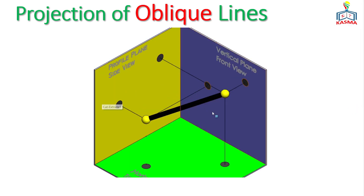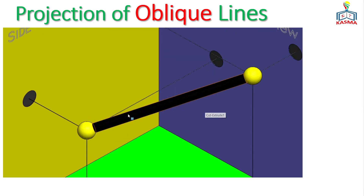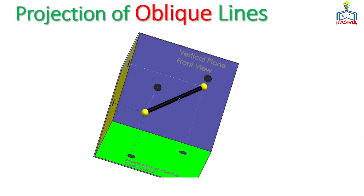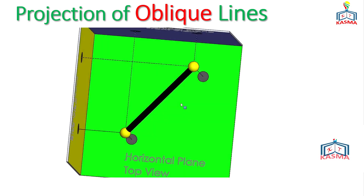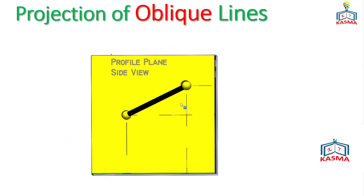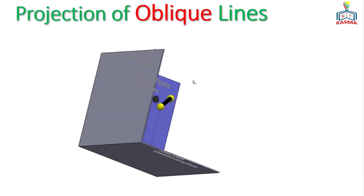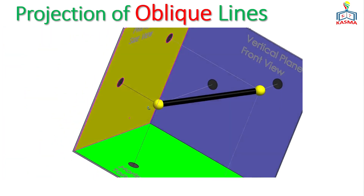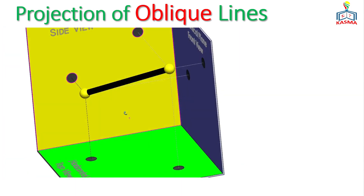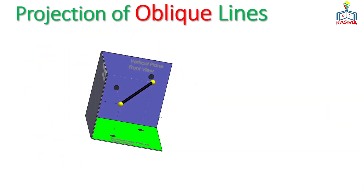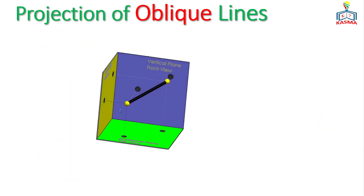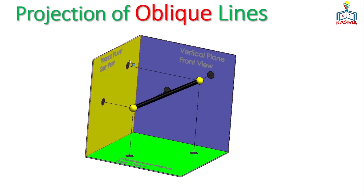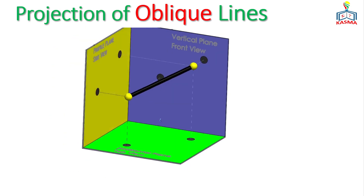In this video we'll see the projections of an oblique line — how we could project a given oblique line into different views like front view, top view, and side view projection, and also how we could construct the oblique line on a standard coordinate system. Oblique lines are lines which are neither parallel nor perpendicular to any of the three principal planes: the vertical plane, profile plane, and horizontal plane.